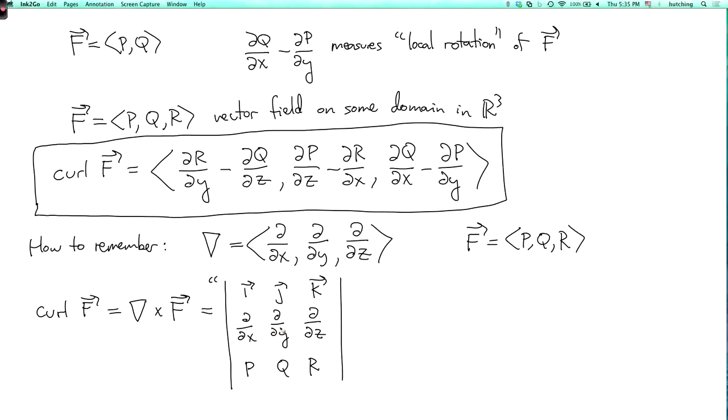So then the first component is d by dy times r minus d by dz times q, which is what we've got up here. The second component is d by dz times p minus d by dx times r, which is what we've got there. And the third component is d by dx times q minus d by dy times p, which is what we have up there. So that's the definition of curl.